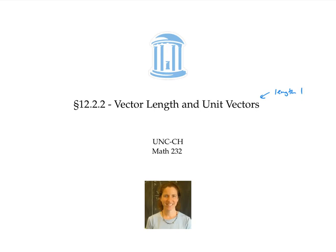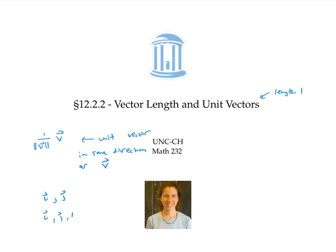In this video, we used the distance formula to find vector length. We defined unit vectors, which are vectors of length one, and noticed that if we take a vector and multiply it by the scalar one over its length, this gives us a unit vector in the same direction as the original vector. We also introduced the standard basis vectors i and j, or i, j, and k in three dimensions, and showed that any vector can be written in terms of standard basis vectors.